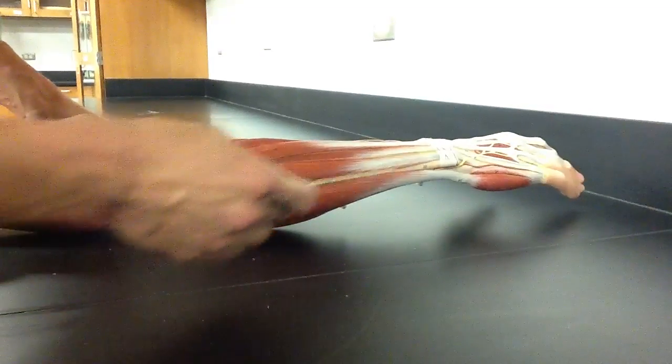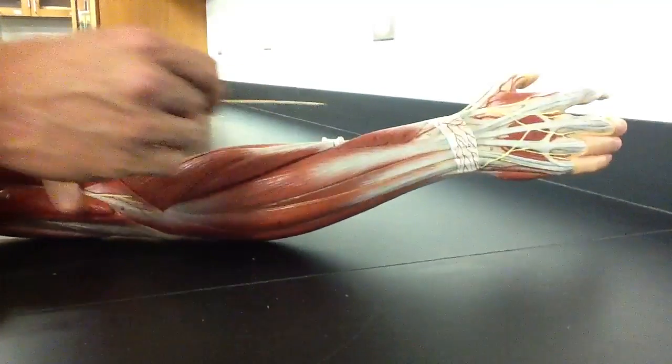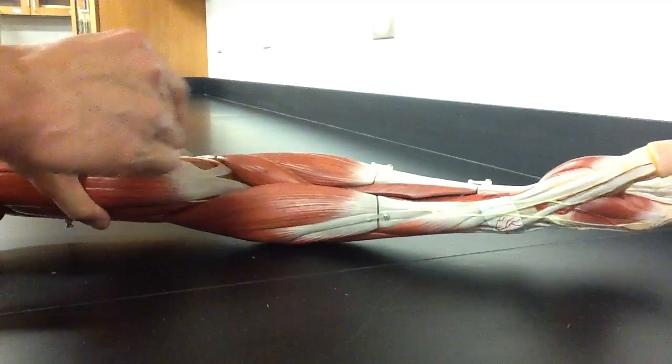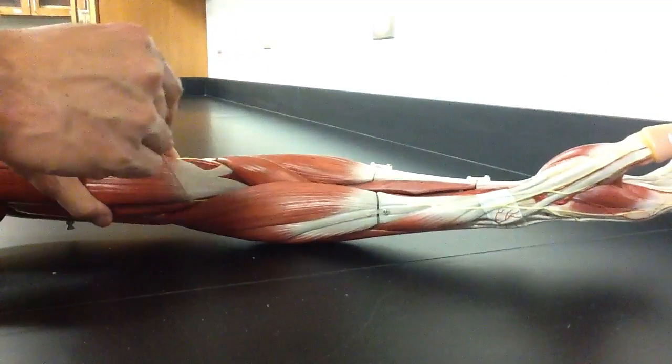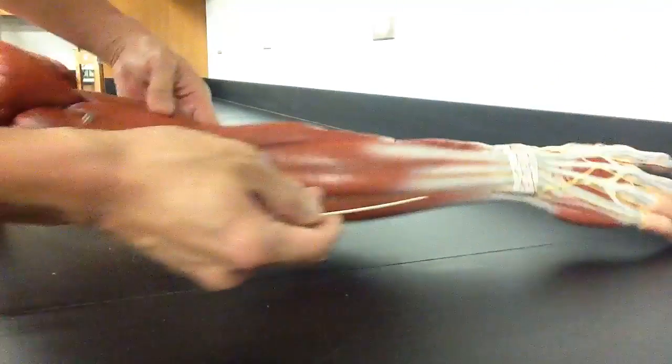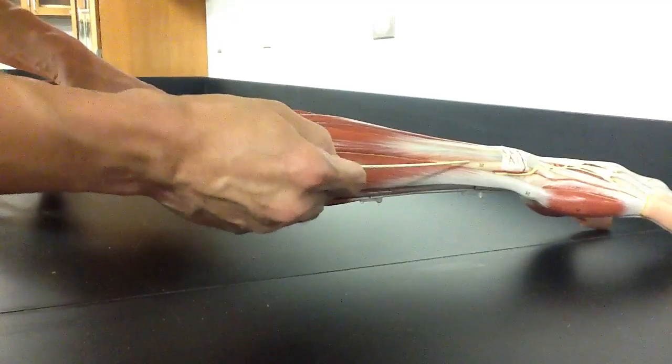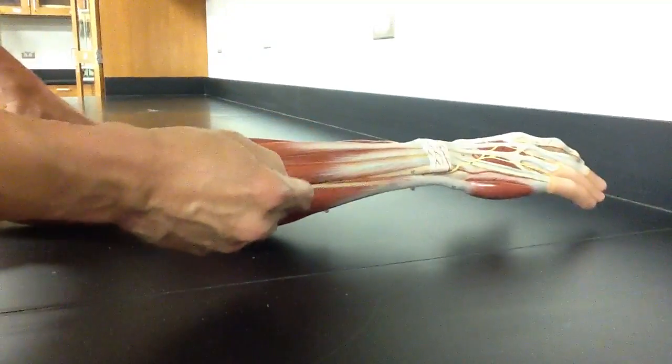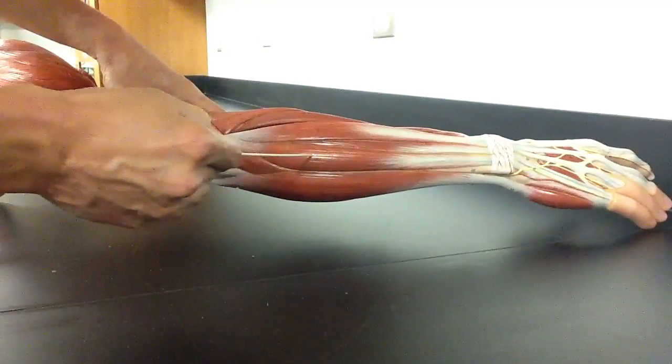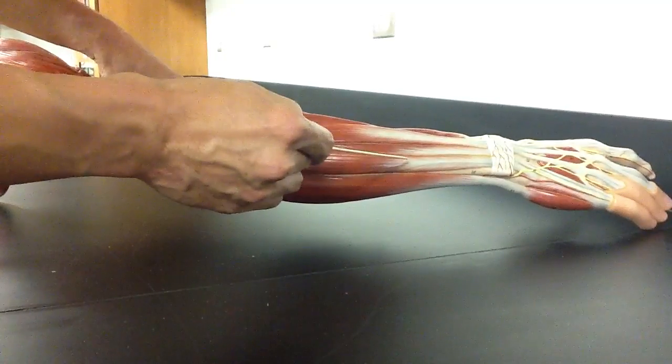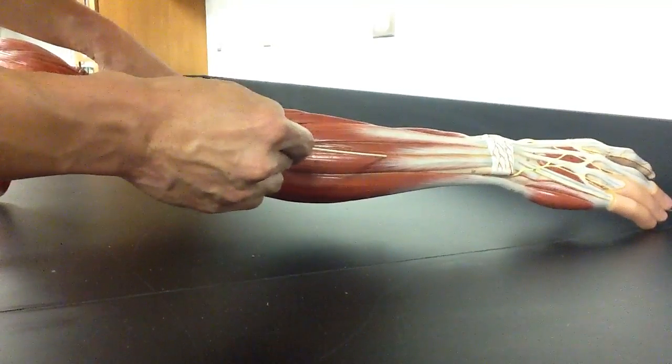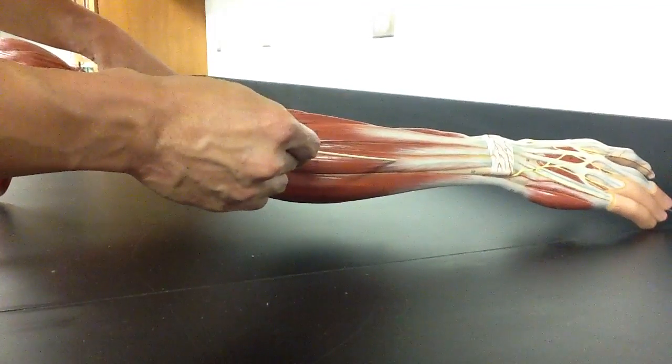So again our borders are going to be the ulna and then we jump across the antecubital fossa with the brachioradialis. So let's start from the ulna because you hopefully will never get lost from the ulna. So once we start from there, the first muscle is this guy, is the extensor carpi ulnaris. So this is the extensor carpi ulnaris.